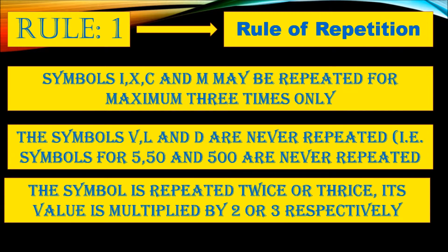When a symbol is repeated twice or thrice, its value is multiplied by two or three respectively. Let's see some examples.